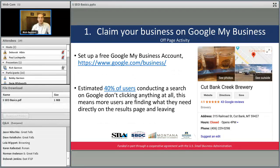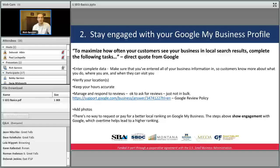Going back to the Cutbank Creek Brewery example: say it's Friday at 3 o'clock and I Google them and see they're open. But if I go there and they're actually closed because their Google My Business listing was wrong, I'm going to be upset with the business and disappointed that Google gave me a wrong result. By staying engaged, you're signaling to Google that your business is active — they'll be more likely to serve you up to customers because they want users to have a positive interaction. That keeps people coming back to Google.